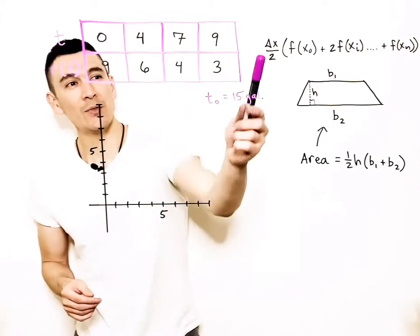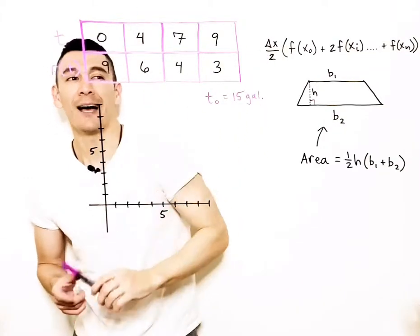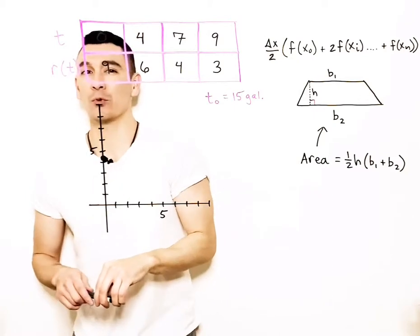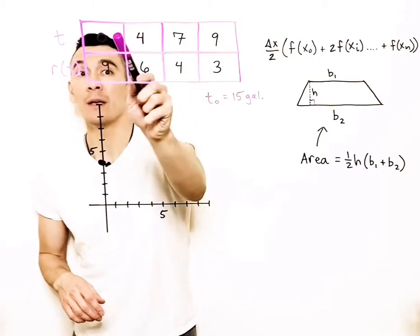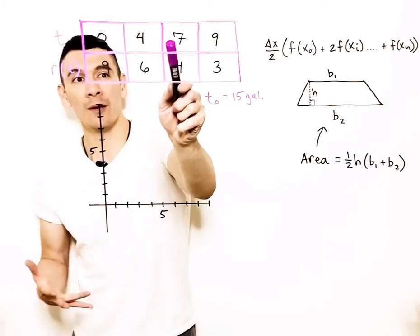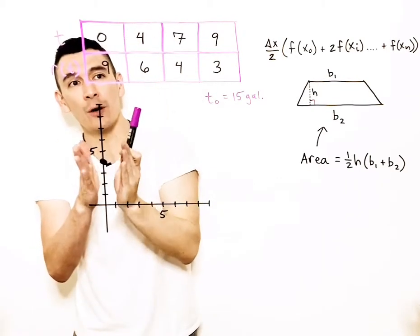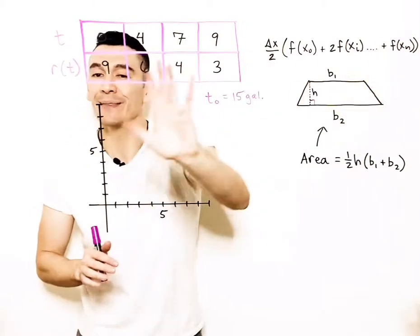They want us to use the trapezoidal rule for this data here. However, we cannot use the trapezoidal rule because these intervals are not even. That has a width of 4, that has a width of 3, and a width of 2. They're not uniform, so the trapezoidal rule cannot be used.